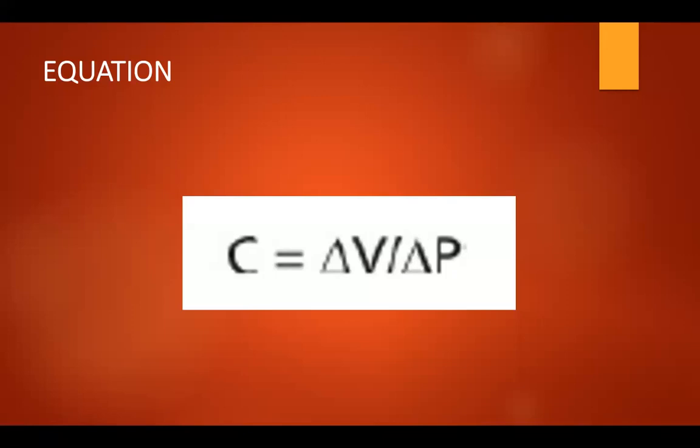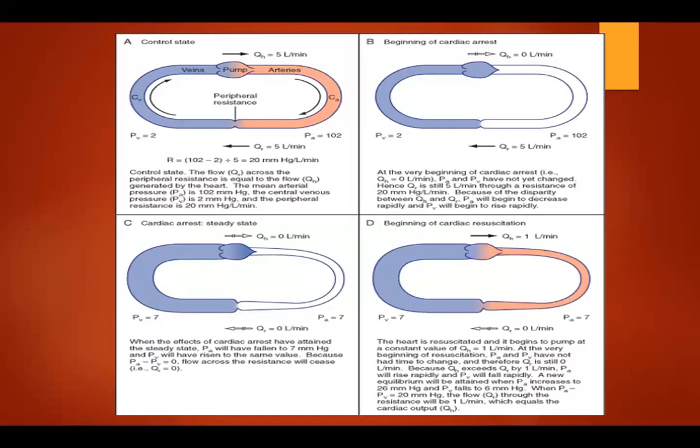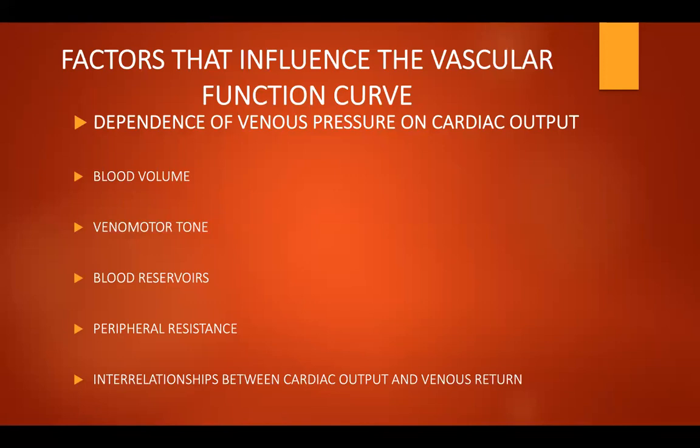The pressure in the venous is greater than the arterial, with a normal ratio of 19 to 1. This figure shows the simplified model of the cardiovascular system, which consists of a pump, arterial compliance, peripheral resistance, and venous compliance. There are different factors that influence the vascular function curve.